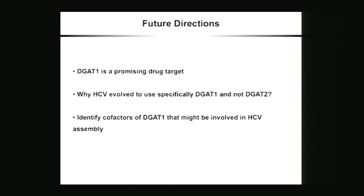One thing we really want to understand is why HCV evolved to use specifically DGAT1 and not DGAT2. The two enzymes have very similar catalytic activity, but a publication earlier this year indicates that DGAT1 might be more involved in the earlier steps of lipid droplet formation, whereas DGAT2 would be involved more in the growth of lipid droplets. This works well with our model that the HCV proteins access nascent lipid droplets at the ER level.